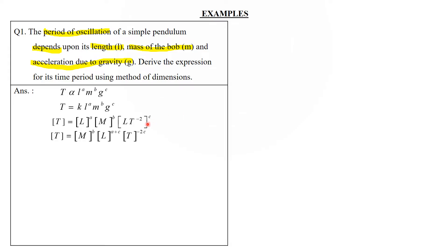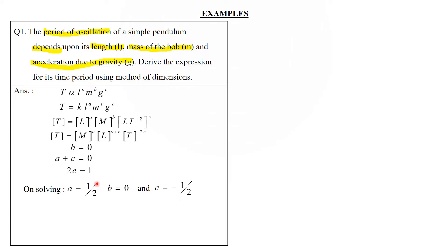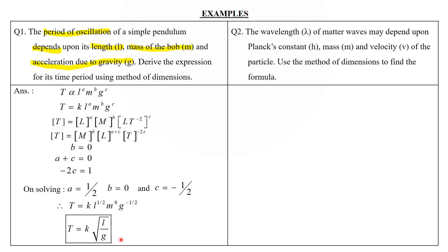Rearranging: M^b, L^(a+c), T^(−2c). Equating powers — M: b = 0; L: a + c = 0; T: −2c = 1, so c = −½. Then a = ½ and b = 0. Substituting back: T = k · l^(½) · g^(−½), which simplifies to T = k√(l/g).